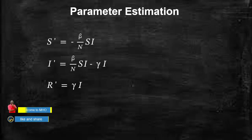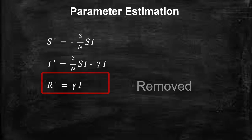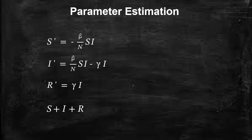As an example I'll use a simple SIR model to illustrate how we can perform parameter estimation. Here we have our SIR model with the susceptible compartment, infected compartment, and the recovered, removed, or dead compartment. If you sum all together — susceptible, infected, and recovered — the sum is equivalent to N, the total population. I'm not going into detail on how individuals move from one compartment to another because we did that in previous videos. If you want that concept, you can go through the link in the description below.